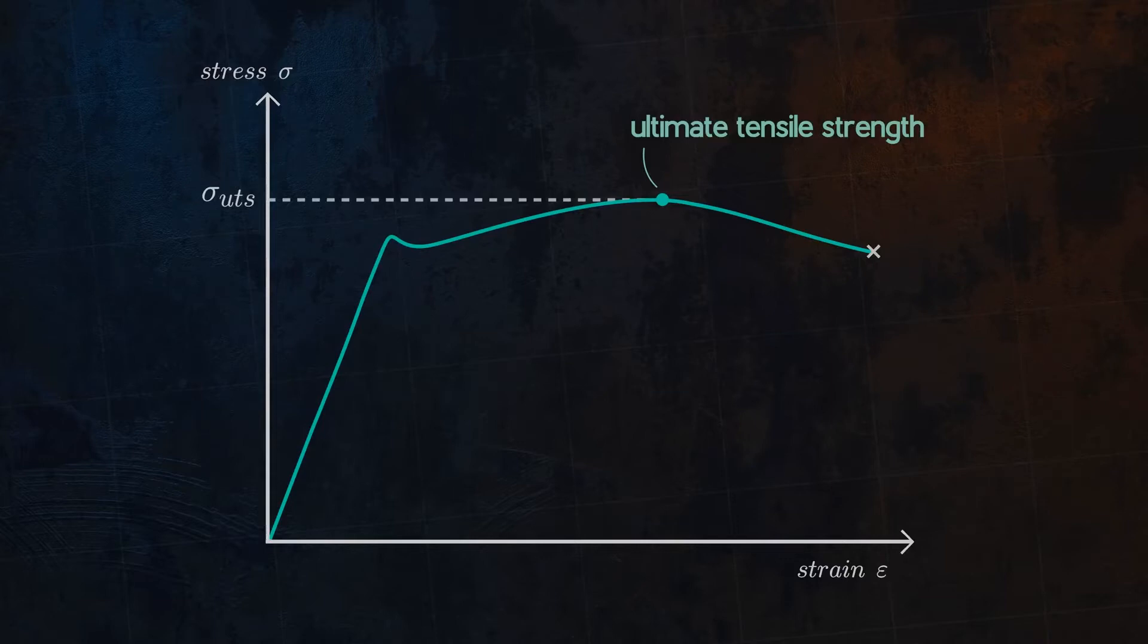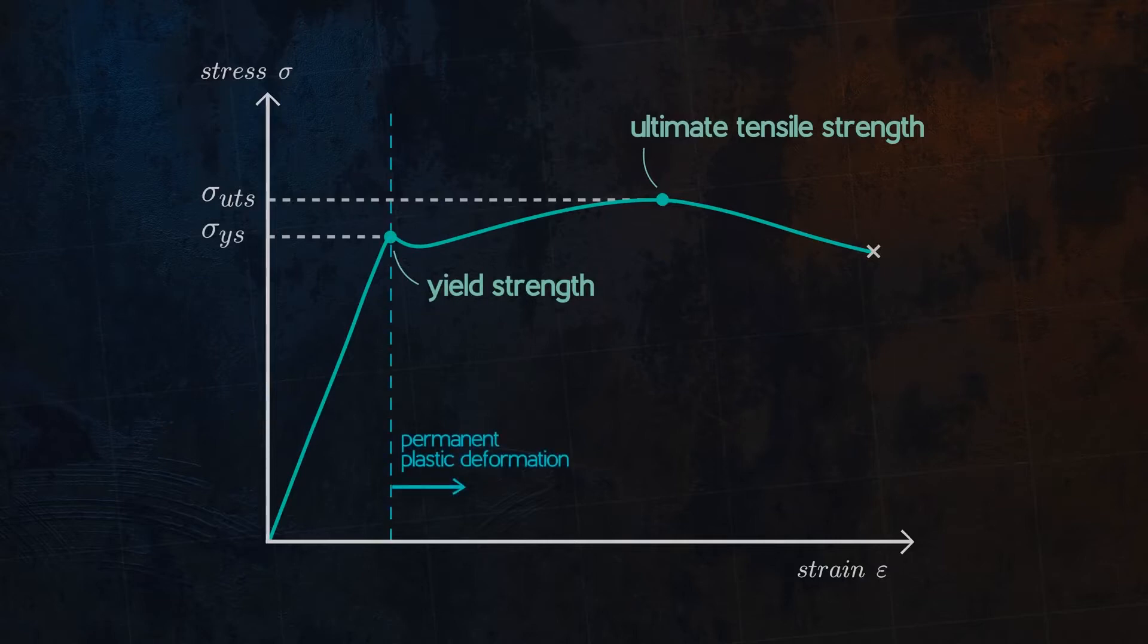The yield strength is defined as the stress at which a material begins to deform plastically. Stressing a material beyond its yield strength will result in permanent deformation after the load is removed.